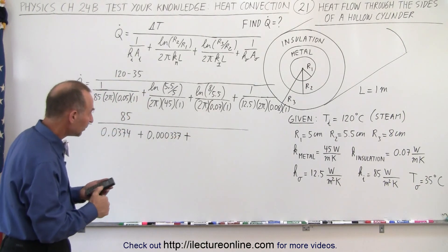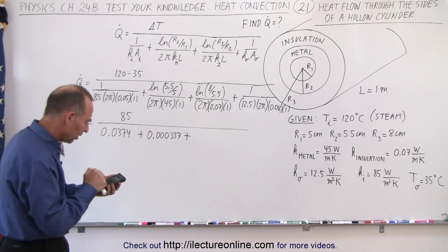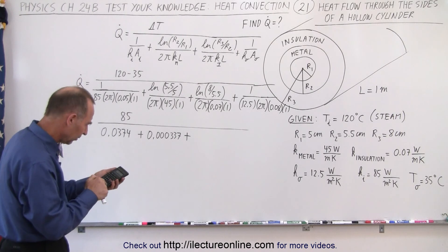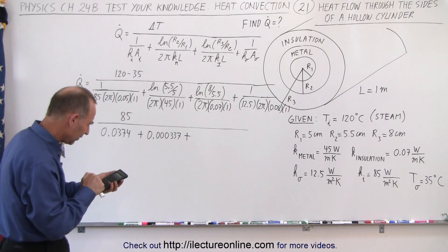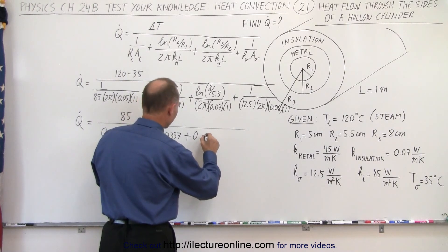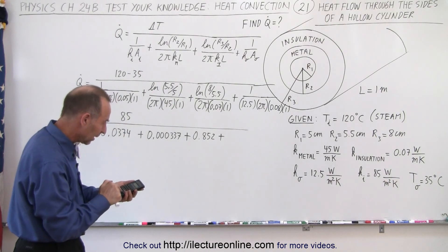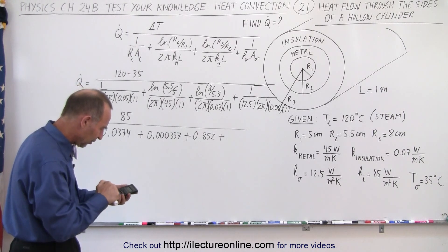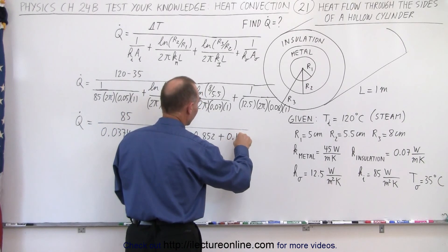Next: 8 divided by 5.5, take the natural log of that, which is 0.37, divide by 2, divide by π, divide by 0.05 — wait, that's the insulation constant — and we get 0.852. And finally: 1 over (12.5 × 2π × 0.08) gives us 0.159.